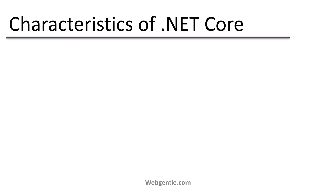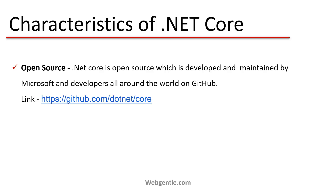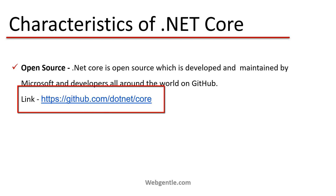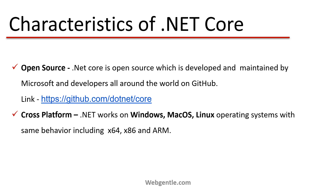To understand why we should choose .NET Core, let's look at its characteristics. First, .NET Core is open source — it is developed and maintained by Microsoft and developers all around the world on GitHub. Unlike .NET Framework, which was not open source, .NET Core is completely open source. You can see all the code, download it from GitHub, and even contribute to the repository.